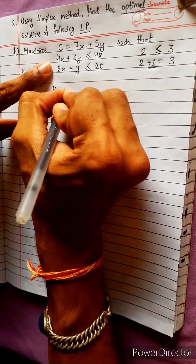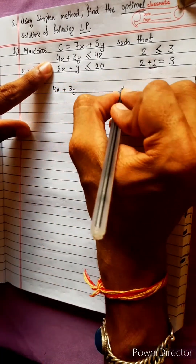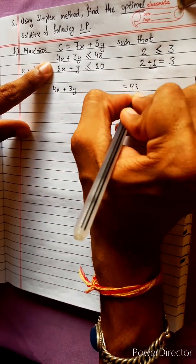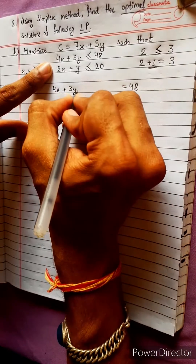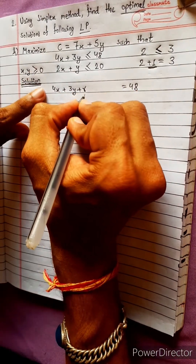4x plus 3y, the third element is equal to 48, and the third element is constant.